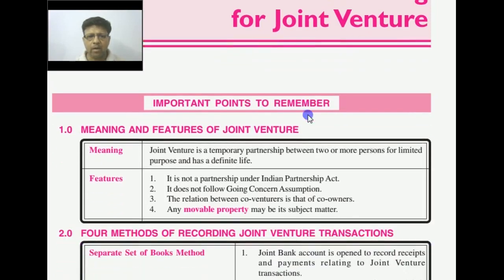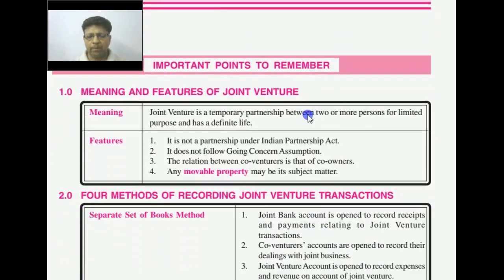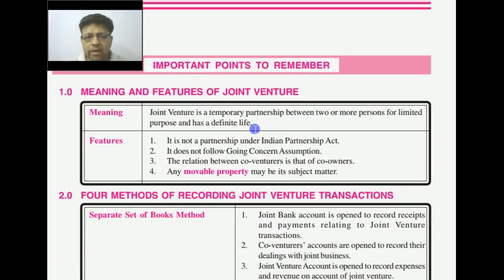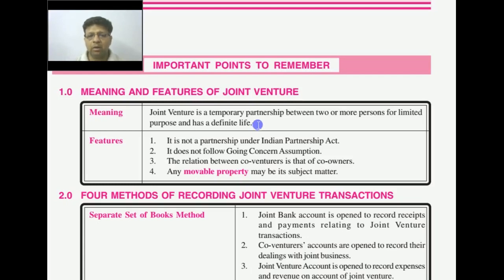Joint venture is a temporary partnership between two or more persons for a limited purpose and has a definite life. Joint venture is normally used to do a particular work. When the work is finished, your joint venture will be finished. This is a temporary agreement between two or more persons.